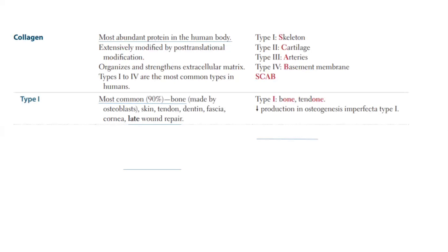Type 1 collagen is the most common collagen. Why is it most common? Because the most abundant and largest organ of our body is the skin. So Type 1 collagen is the most common collagen in our body. Not only the skin, but also bone, dentine, tendons, fascia, and cornea contain Type 1 collagen. Most importantly, you have to remember that Type 1 collagen is responsible for late wound repair. This is an already repeated topic in previous examinations.